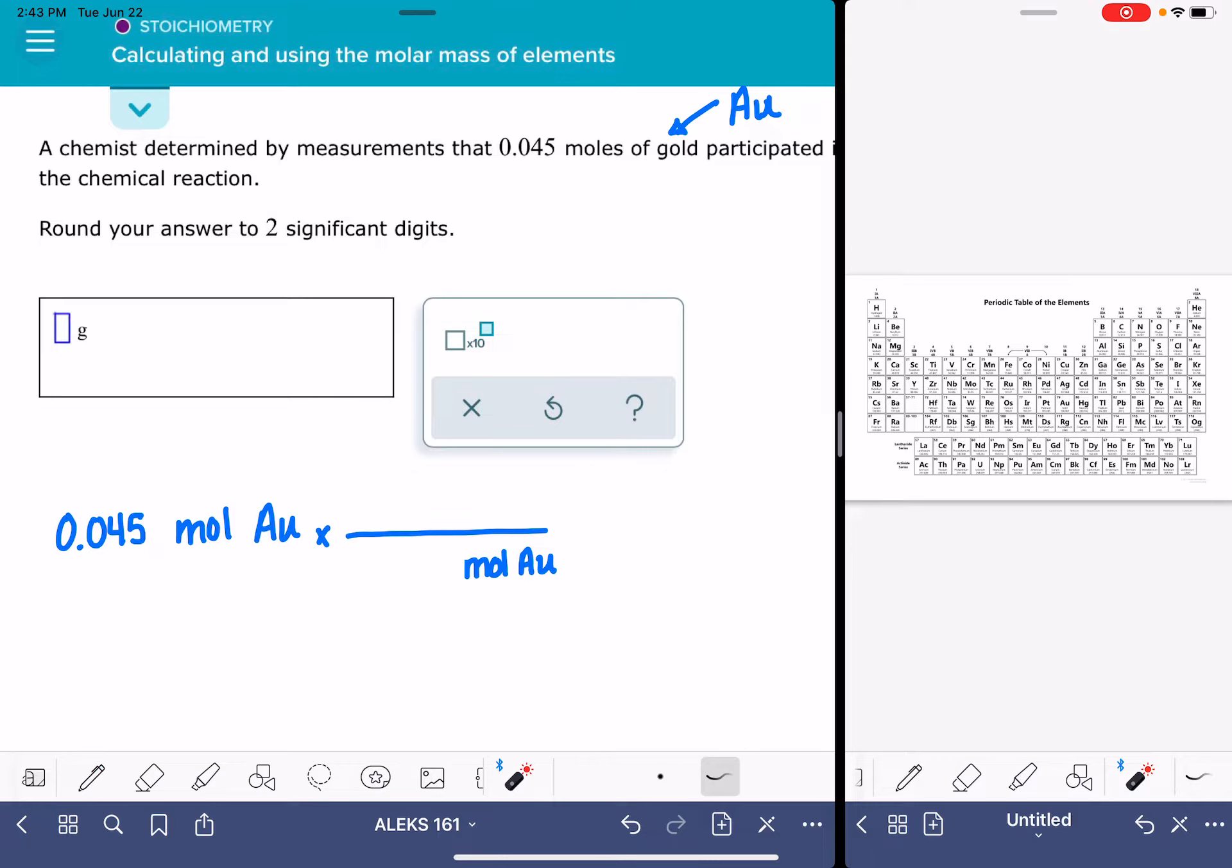On the top of the fraction up here, we want to write whatever unit we're trying to convert into. So whatever unit this question is asking us to figure out, whatever is over here in the answer box, that's what we're going to put in this spot. And even though ALEKS doesn't have this, I also want to put the symbol for the element as well. That's just a good habit to be in.